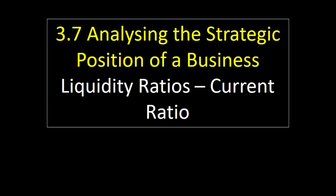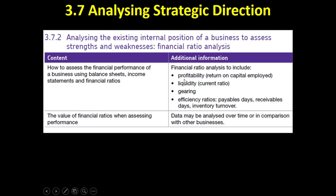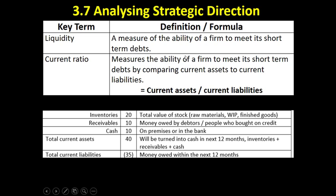Hi, this is Mr. Evans. This video is going to go over the current ratio, which is the liquidity ratio you need to be aware of — the second bullet point in this list of ratios. The first thing you need to know is what liquidity is: liquidity is a measure of the ability of a firm to meet its short-term debts. If you've ever heard of a firm going into liquidation, that basically means the firm has been unable to meet its debts and its assets are being sold off.